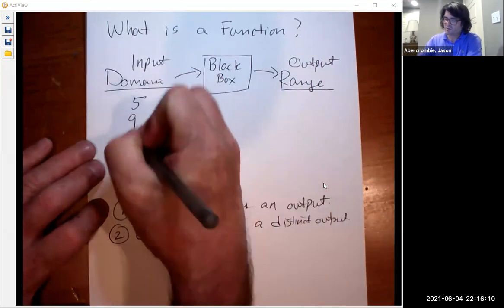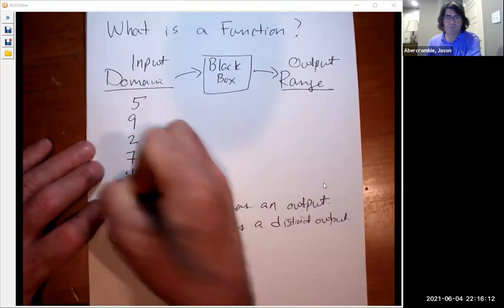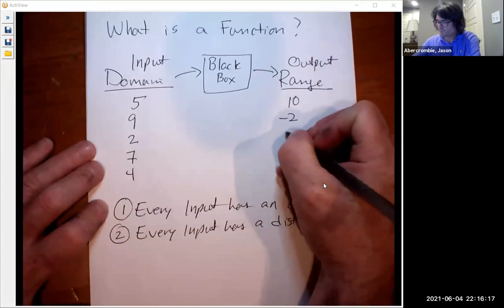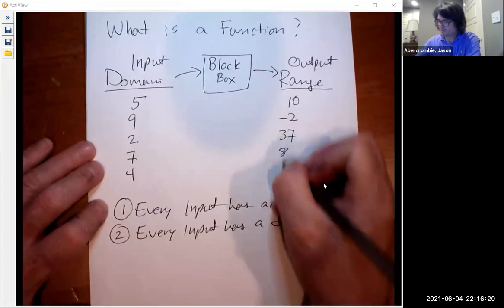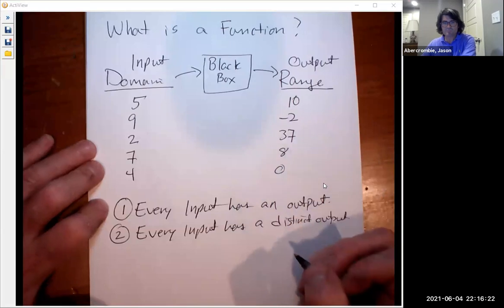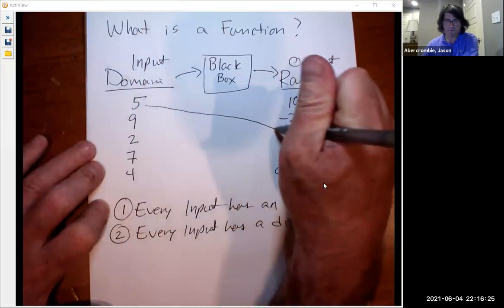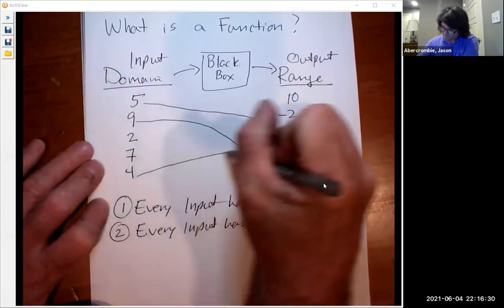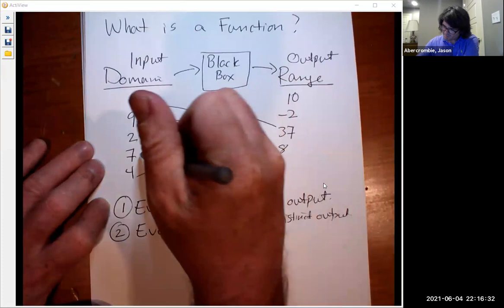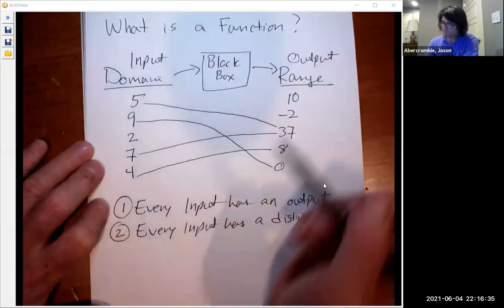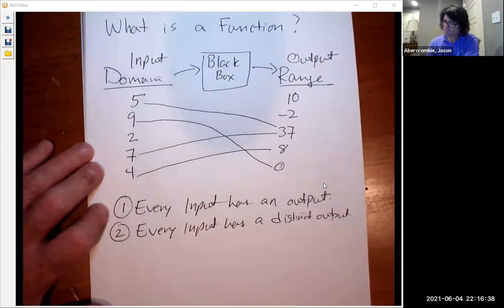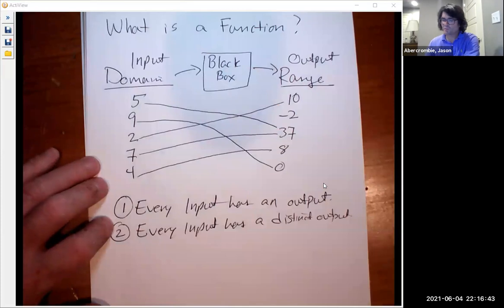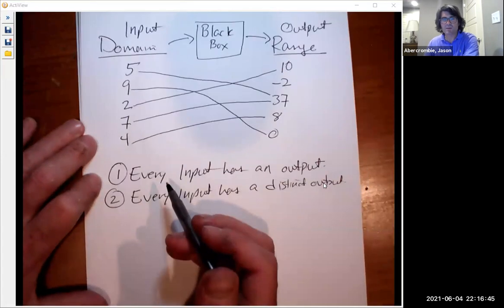So let's just kind of start out with a domain: five, nine, two, seven, four, and keep it simple here. I'm just making these up. Ten, negative two, three, seven, eight, and zero. So maybe five is linked to 37, and nine goes to zero, and four goes to eight, and seven goes to 37. Notice that I guess two needs to go somewhere, doesn't it? Two can go to ten. So what I've set up here with my domain and range is a function.